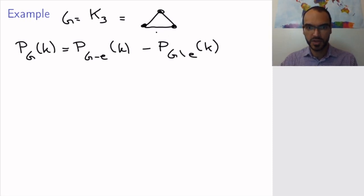So if I call this edge E, I don't have to carry around these P's really. I mean, I know I'm calculating number of colors. So maybe let me just replace them with drawings. So when I remove E, I get this graph. And when I contract E, I get this graph.